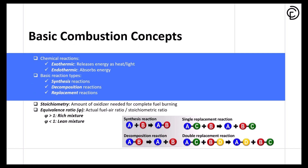Let's break down the fundamental concepts of combustion. First, let's talk about chemical reactions. There are two main types we deal with in combustion. First, exothermic reactions, which release energy in the form of heat and light — think of a flame burning. Secondly, endothermic reactions, which actually absorb energy from their surroundings. When we look at basic reaction types, there are three main categories: synthesis reactions, where elements combine to form new compounds; decomposition reactions, where compounds break down into simpler substances; and replacement reactions, where elements swap places with each other.